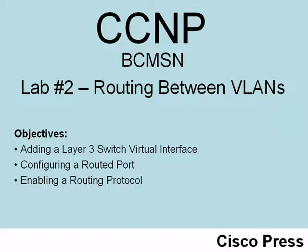We will need to globally enable IP routing and configure a routing protocol. We are going to use EIGRP, and if you would like a refresher on EIGRP commands, you may want to check out BSCI lab number one. Once we have EIGRP set up, the SVI created, and the layer 3 routed port configured, we are then going to verify inter-VLAN routing — can we route from one subnet to another?